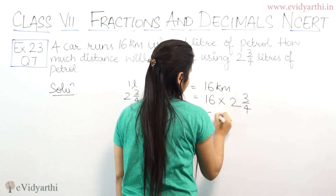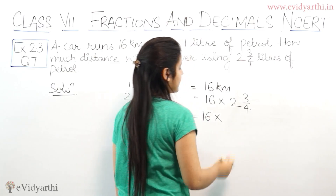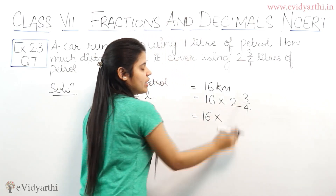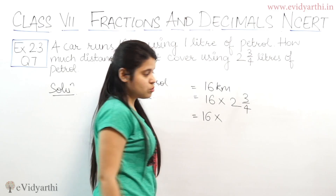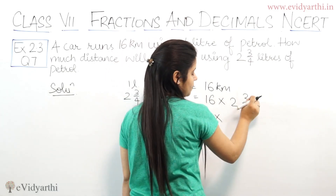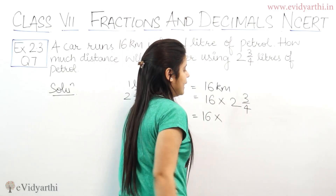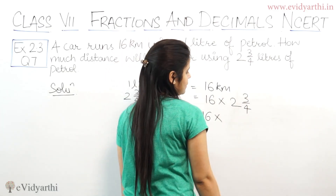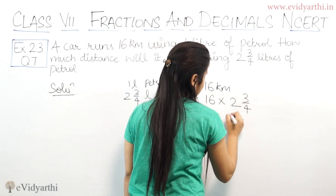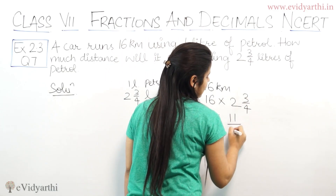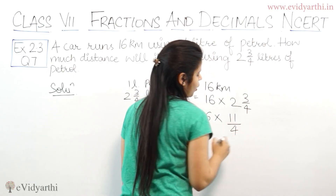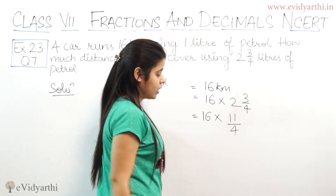This is in mixed fraction form, so we convert it to a normal fraction. 4 into 2 is 8, plus 3 equals 11. So 2 and 3 by 4 becomes 11 upon 4.